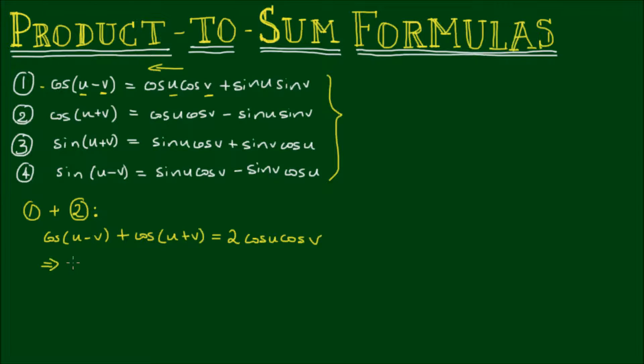So rearranging this equation, or dividing both sides by 2, yields cos(u)cos(v) is equal to 1/2 of [cos(u-v) plus cos(u+v)]. And this is the first of the product to sum formulas.